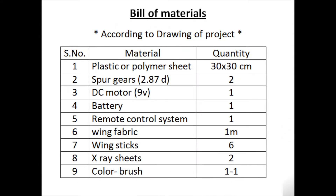Now, according to this diagram and design, we have a requirement for some materials. This is the bill of materials. Here we use a plastic or polymer sheet, 13 to 30 cm square area of sheet is required. And two plastic spare gears, diameter 2.87. One DC motor, 9 voltage. One battery. A remote control system. Wing fabric, wing sticks, x-ray sheets, and color and brush. All this data is according to the design and diagram of the project, and it can also be changed.